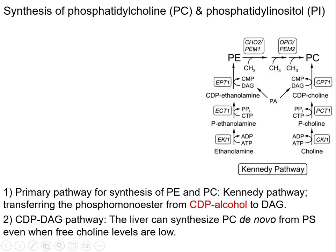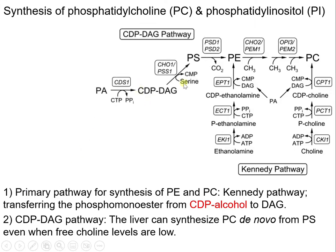In contrast, the liver can synthesize PC de novo from PS through the CDP-DAG pathway. Here, PA is loaded onto a nucleotide. The result is CDP-DAG. The enzyme PSS1 exchanges CMP for serine, and the result is PS. PS is then converted to PC.